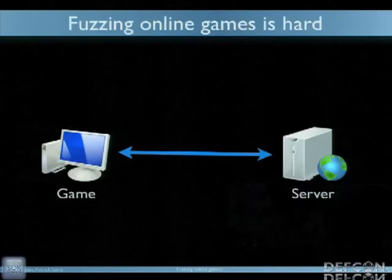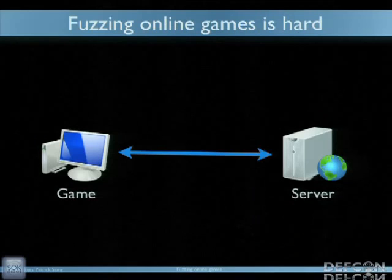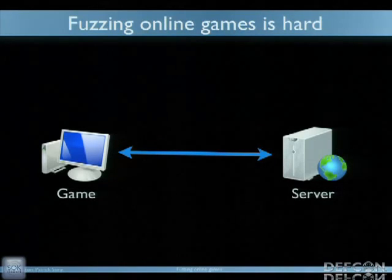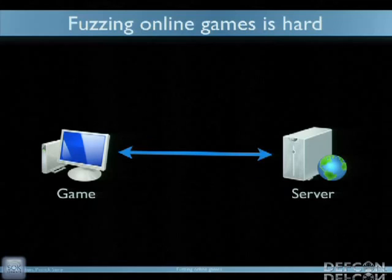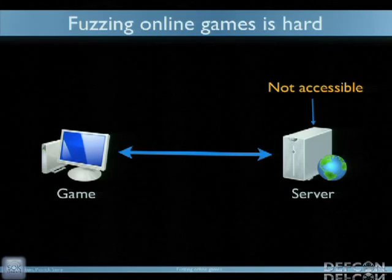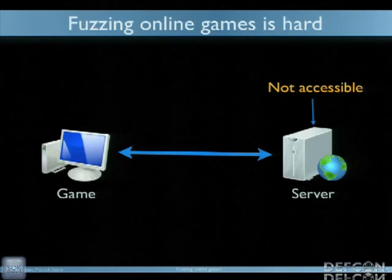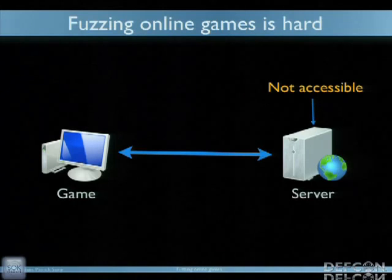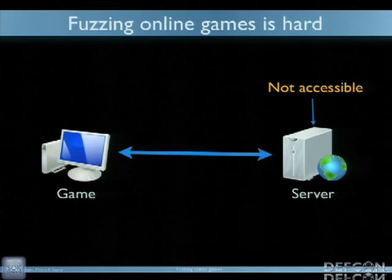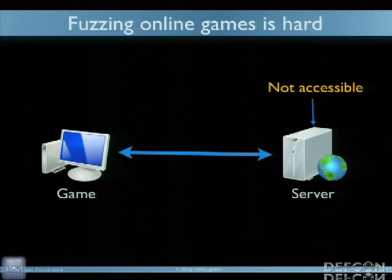So why is fuzzing an online game so hard? Well, in theory it's super simple — you have a server and you have a game and nothing special except a few things. First, you don't have the server. When you try to fuzz, let's say, Apache or an FTP server, you usually have the binary as a release so you can instrument it, look at how it works, and relaunch it. When you are fuzzing games, you simply don't have the server. The server is out of your reach; you don't know how it works, how it's run, or which platform it runs on.